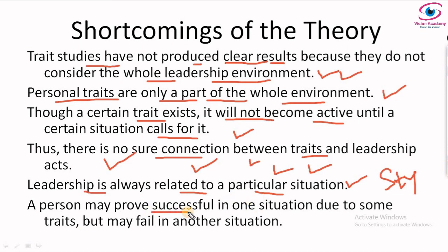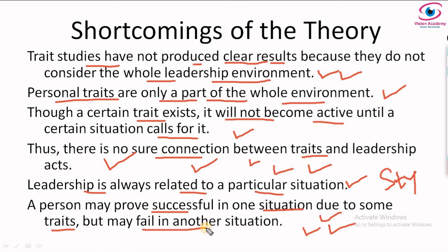A person may prove very successful in one situation due to some traits. Height, weight, or age may matter, and he may be successful in one situation, but he may fail in another situation. He may not be attractive or may not be very good at diplomacy. In such cases, trait theory will fail. So trait theory has its own shortcomings.